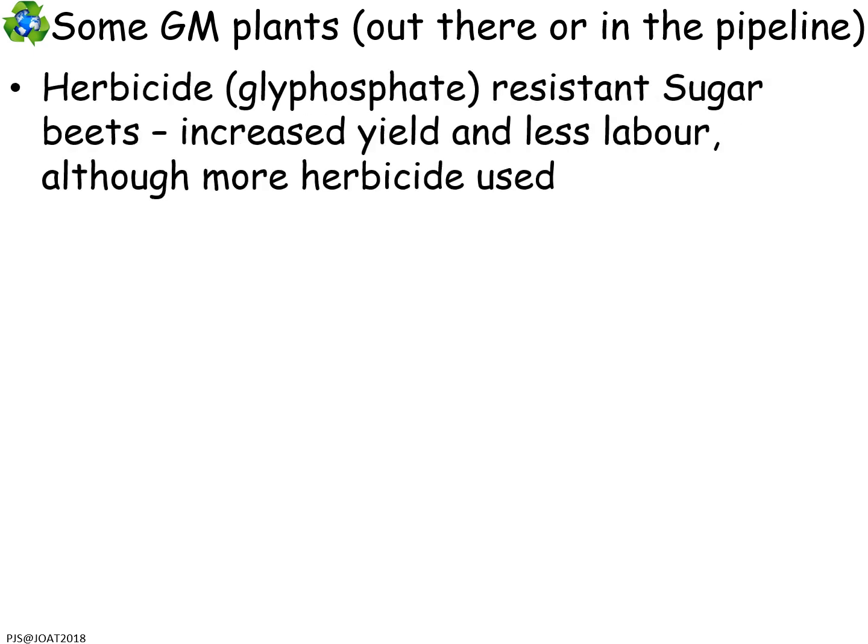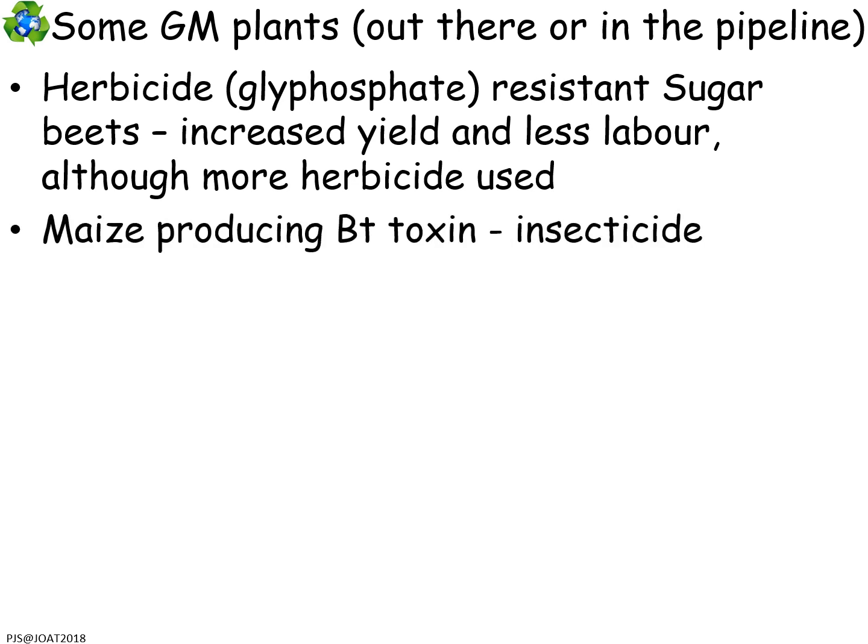Some GM plants are already out there, or are in the pipeline awaiting approvals. One route is to produce herbicide resistance, which means you can increase yield by cutting down competition — if the herbicide doesn't affect your crop but kills competing plants, your crop faces no competition. Another approach is to deal with pests that reduce yield by producing plants that make their own insecticide, meaning you don't have to spray.